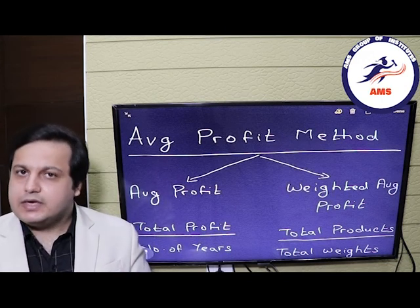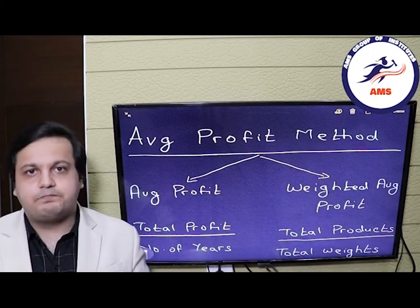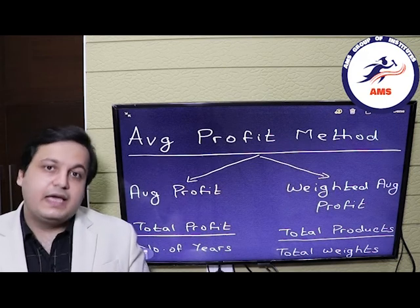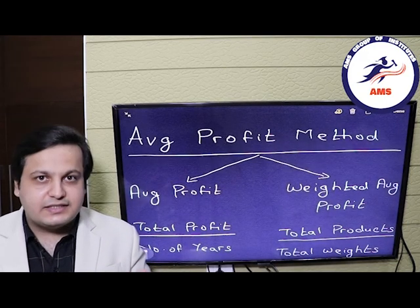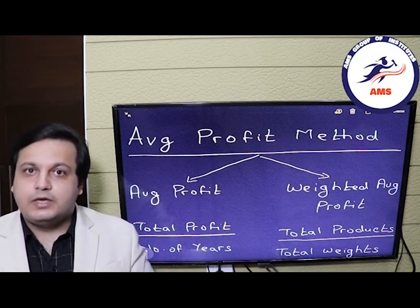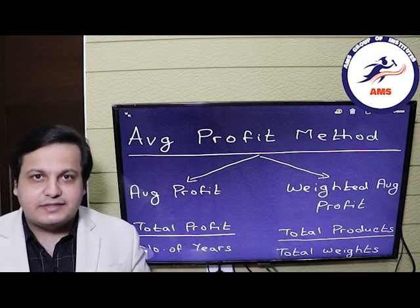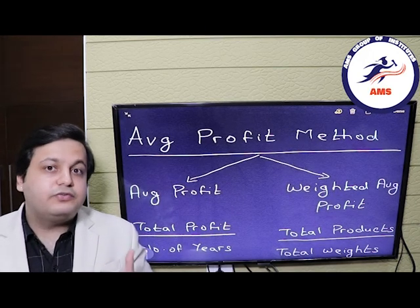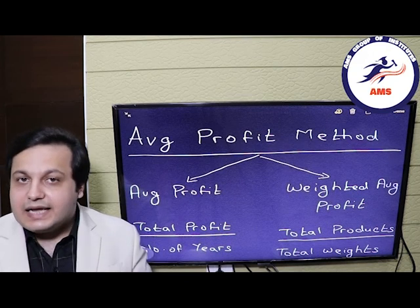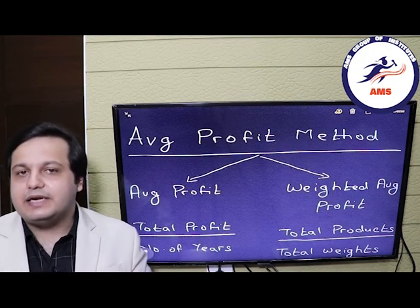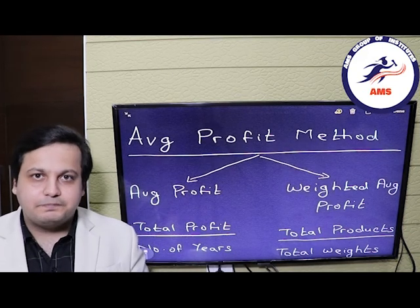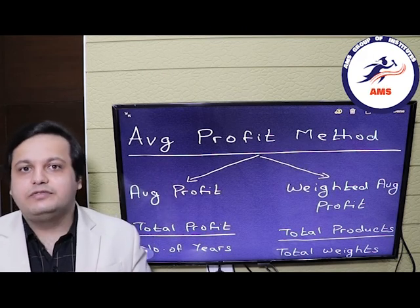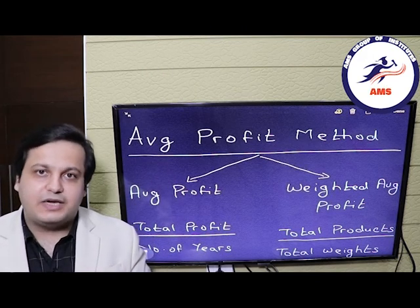In layman terms, how can we calculate goodwill? Simply, let's take an example. We purchased a partnership firm worth rupees 1 crore. We received assets amounting to around 90 lakhs and also took over liabilities of around 20 lakhs. So the net assets will be only 70 lakhs. However, you paid 1 crore. So why did we pay the extra amount? It was because of the value of the goodwill of the firm, that is 30 lakh rupees.